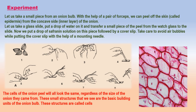You can observe this slide under the low and high power of a light compound microscope. If you prepare temporary mounts of onion peels with different sizes, you will observe that they all have similar small structures. These structures look similar to each other and together form a big structure such as an onion bulb. These small microscopic structures are the basic building units of the onion bulb, and they are called cells. Not only onion, but all organisms that you see around are made up of cells.